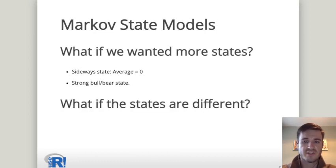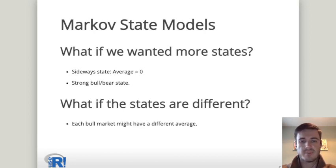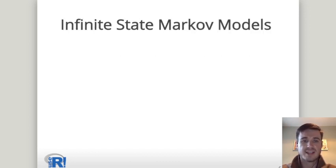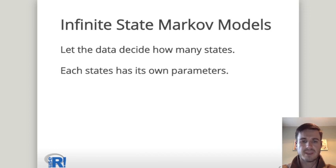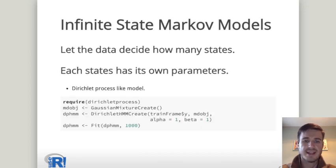Also, what if the states are different? In a Markov state model you're assuming that each state is the same, but actually each bull market might have a different average over time. So instead we can use an infinite state Markov model, and this lets the data decide how many states are appropriate.